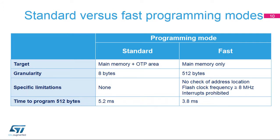This slide compares standard and fast programming modes. Standard mode can be used to program the main memory and OTP areas, while fast mode cannot be used for OTP programming. Standard mode allows programming 64-bit double words or 8 bytes, whereas fast mode only allows programming 512 bytes. In fast mode, the address location content is not checked before programming. The flash clock frequency must be greater than 8 megahertz and CPU interrupts are prohibited. It takes 5.2 milliseconds to program 512 bytes in standard mode and 3.8 milliseconds in fast mode.